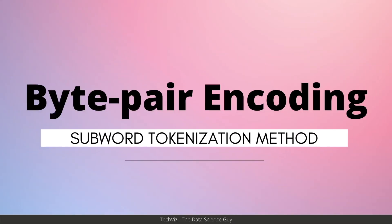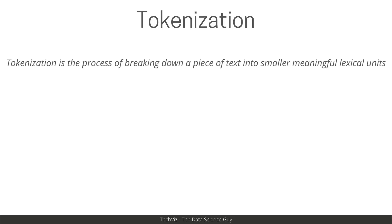Hello there, welcome back to the new video. Today we'll be looking at the concept of byte pair encoding, a subword tokenization method that is often used in many of the transformer models. Tokenization is a method of breaking down a given piece of text into smaller yet meaningful lexical units, and there are three popular ways of doing the same.